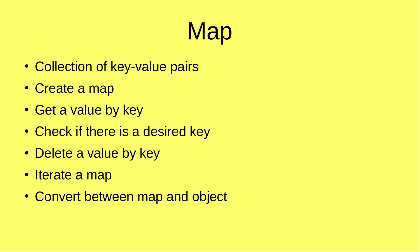What is a map in JavaScript? It is just a collection of key-value pairs. In this video I'm going to create a map and add some key-value pairs to it. After that I can get a value by using the key, check whether a certain key exists in a given map, delete a value by using the key, iterate a map, and also convert between an object and a map.